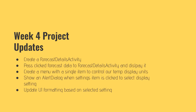For this week's project, we're going to have several key things. We'll create a new activity called Forecast Details Activity, pass clicked forecast data to it, and display it on screen. We'll create a menu with a single menu item to control the temperature display unit. When we click that menu item, we'll show an alert dialogue. Finally, we'll update our UI formatting based on the selected setting stored in shared preferences.